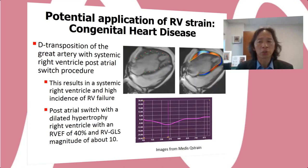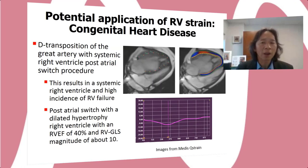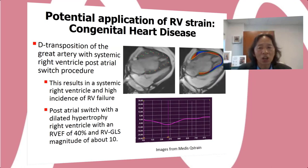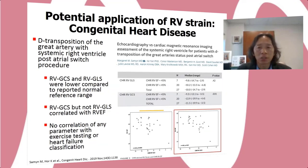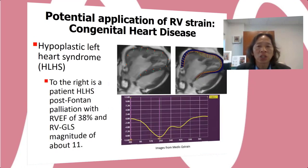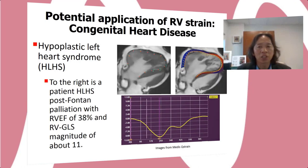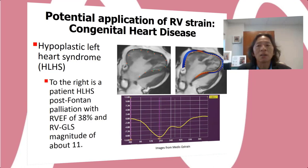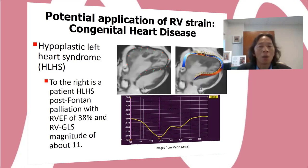Patients with d-TGA status post-atrial switch procedure have a systemic right ventricle with a high incidence of RV failure. This is a 35-year-old patient with a dilated, hypertrophied, and dysfunctional RV. The RVEF is 40% and the RV GLS is about 10. Salmon et al. reported in 27 patients status post-atrial switch operation lower RV GCS and RV GLS than the control population. Interestingly, only RV GCS correlated with RV ejection fraction.